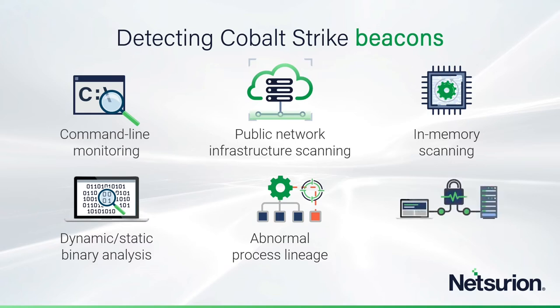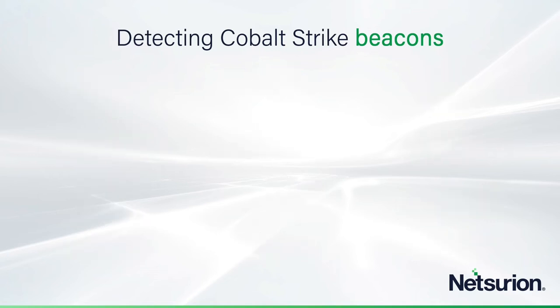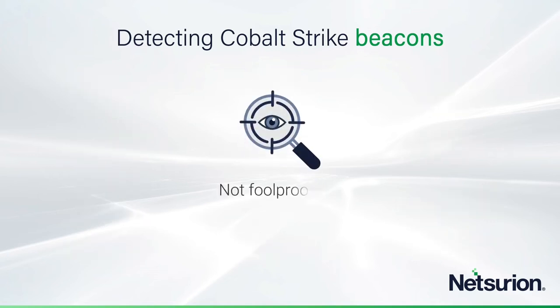You could also monitor network traffic. If you're lucky, the IP address or destination where the Cobalt Strike beacon is communicating back to the server is known to be bad, and you could catch that. All fairly difficult, labor-intensive, thankless kinds of jobs. And of course, they can all be defeated because Cobalt Strike is so infinitely configurable. These are not foolproof techniques, but until you get something better, eternal vigilance is the price of freedom.